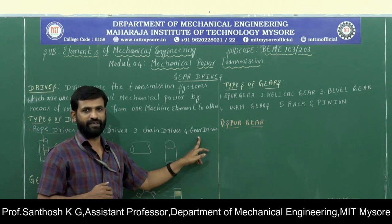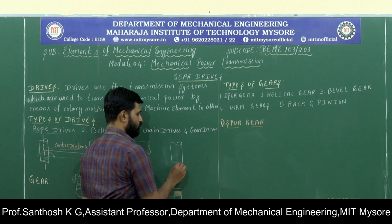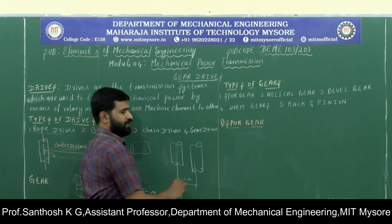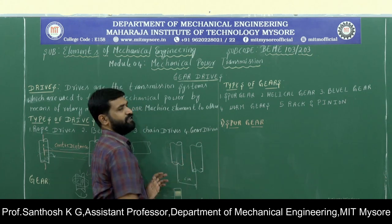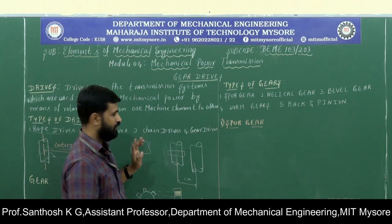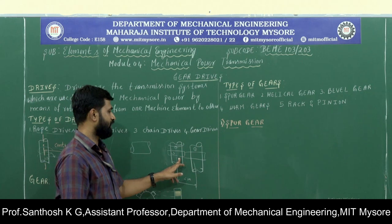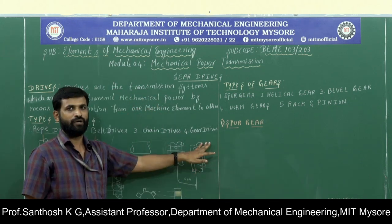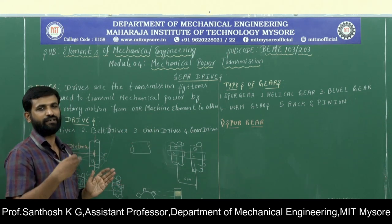Gear drives are used whenever we need to transmit motion between two shafts placed at very less distance — normally less than a meter. To rotate the second shaft, we place a gear on each shaft. When shaft one rotates, gear one rotates, which causes gear two to rotate, and thereby shaft two also rotates. This is how various drives are used to transmit motion between machine elements, normally shafts.